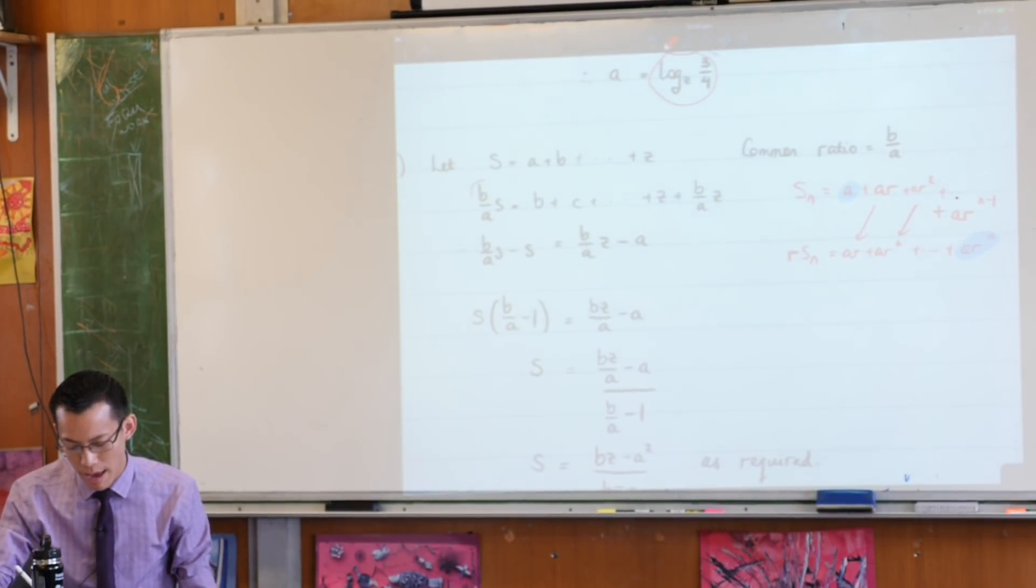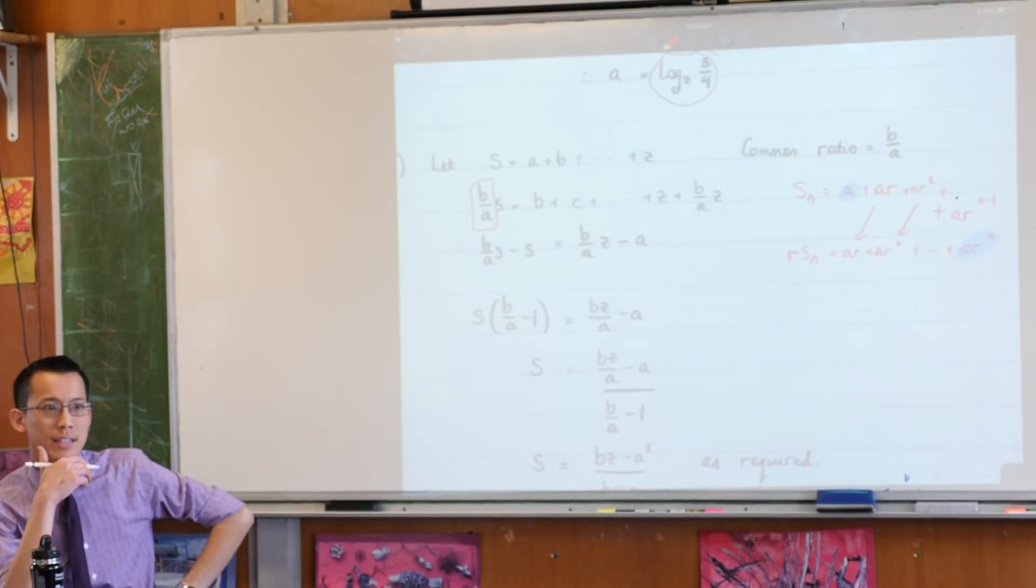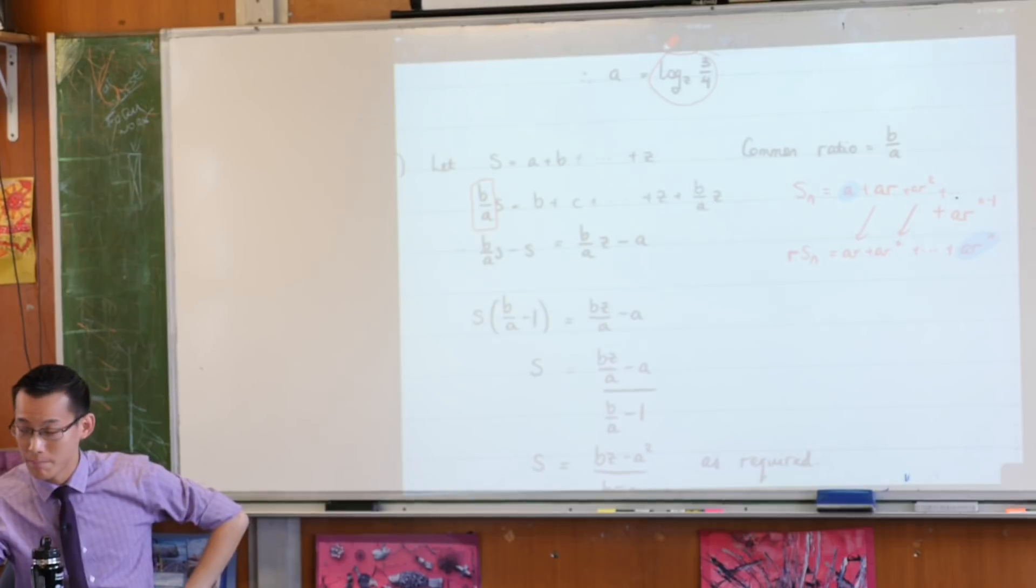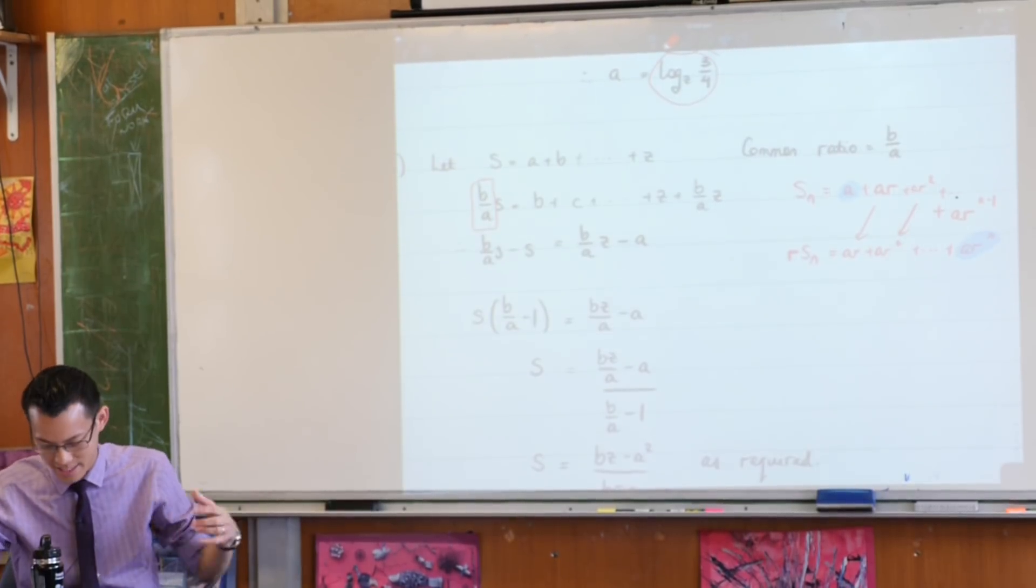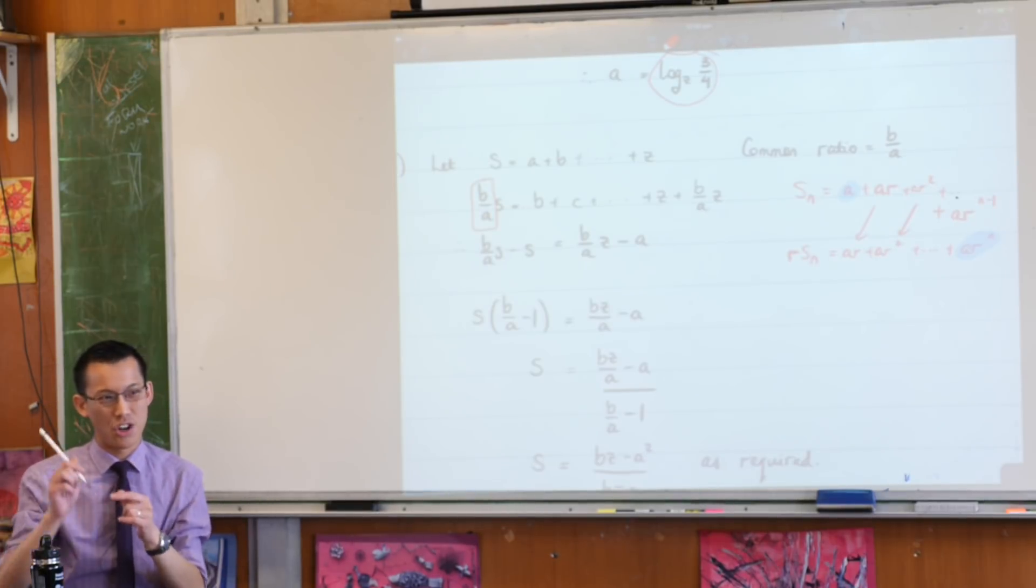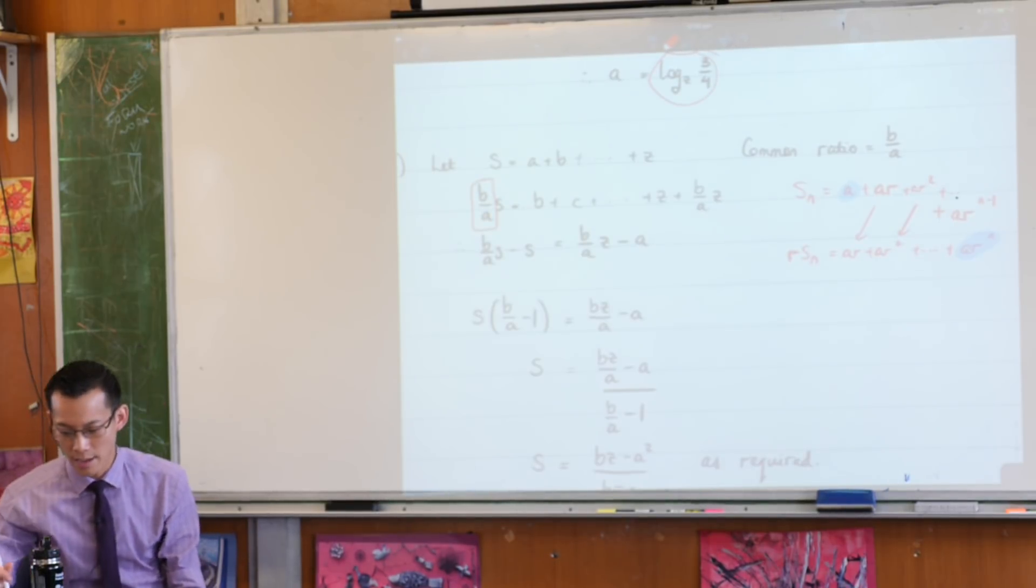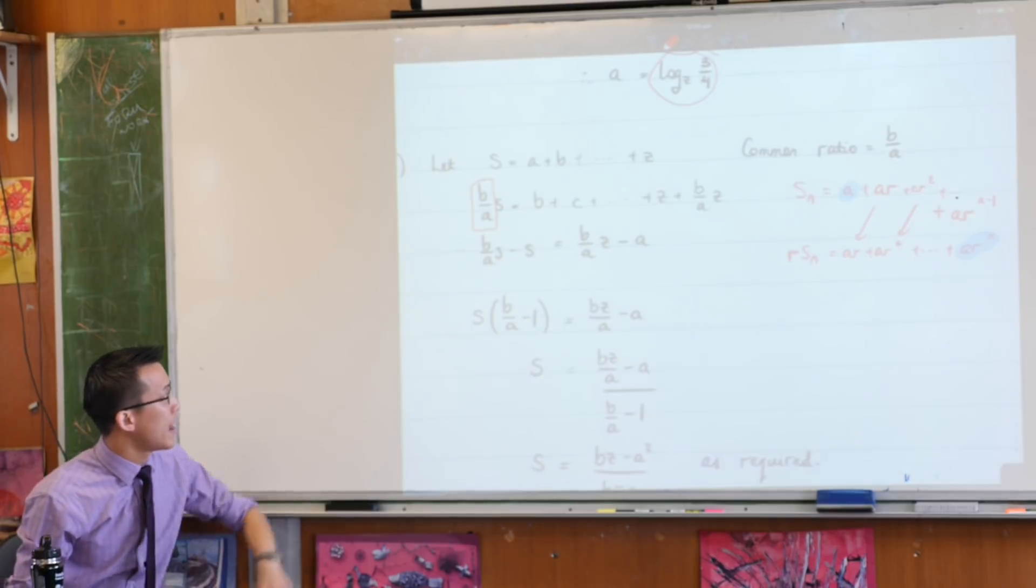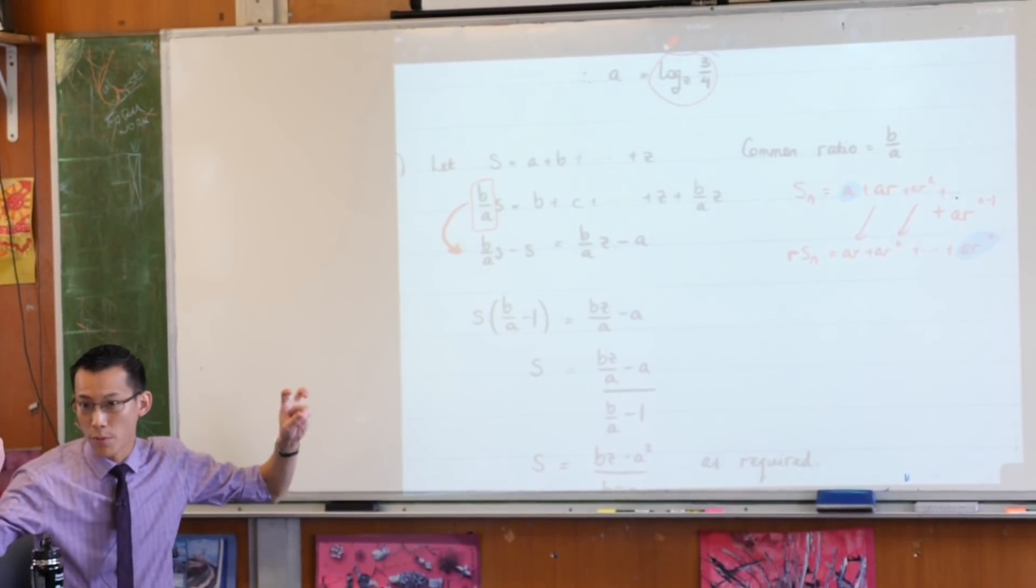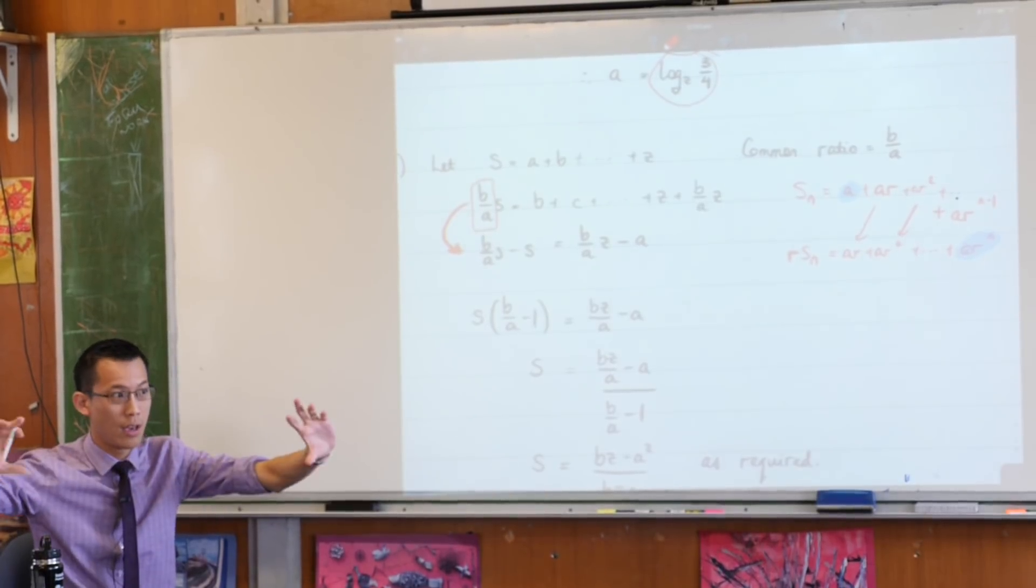So what I've done is I've multiplied by this guy, where did that come from? What is that? That's the common ratio. I know it's not posed in a form that you're familiar with, but that's kind of the point of this question. You can still work out the common ratio, just like we worked out the common difference in the previous part. So I multiplied through by that, and then in the next line, I've done exactly what we did with the normal proof. I subtracted one whole series from the other.